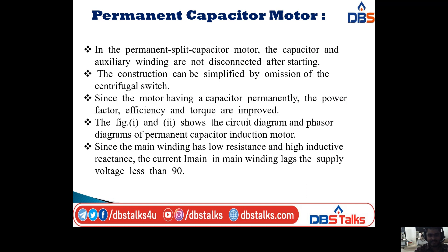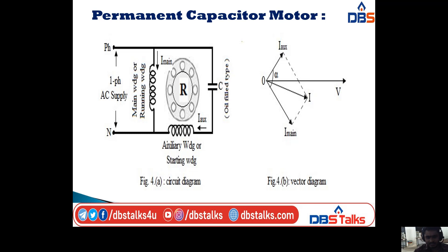The slide shows the circuit diagram and phasor diagram of the permanent capacitor induction motor. On the left side we have a circuit diagram, and on the right side we have the phasor diagram. In the circuit diagram, we are taking two windings: main winding (running winding) and auxiliary winding (starting winding). We are taking a capacitor in series with the auxiliary winding. In this method, we are not using any switch — there is no centrifugal switch, unlike the previous three methods.